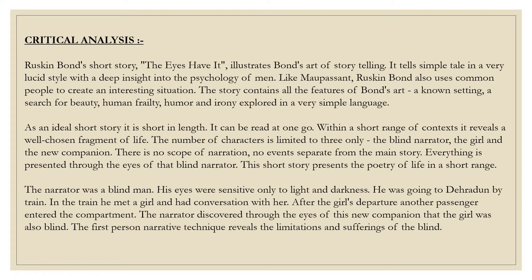As an ideal short story, it is short in length and can be read at one go. Within a short range of context, it reveals a well-chosen fragment of life. The number of characters is limited to three: the blind narrator, the girl, and the new companion. Some other characters are also mentioned, like the parents of the girl and the aunt she is supposed to meet at the railway station. There are also some porters and vendors mentioned, used only to develop the natural setting of the story. There is no sub-plot separate from the main story; everything is presented through the eyes of the blind narrator.